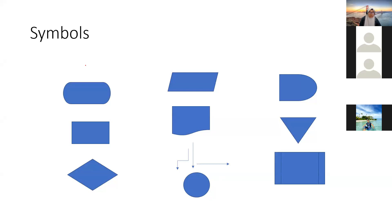Looking at the symbols here: the one with a semicircle at the end and a straight line — this is for start and end. If I want to start and then end, we begin with this symbol. Even if I don't write 'start' or 'end', when you see this shape, you already know. The starting point is from here, and the ending point is at this place.